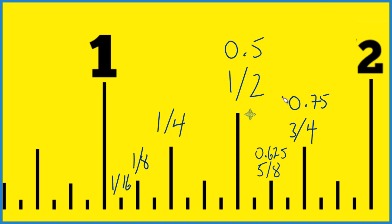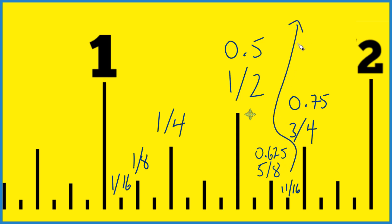So since 0.67 is greater than 0.625, we know it's going to be somewhere in this space right here. So let's do sixteenths — one, two, three. This is 11 sixteenths of an inch, and that as a decimal — let's write it up here since we're almost out of space — that as a decimal is 0.6875.